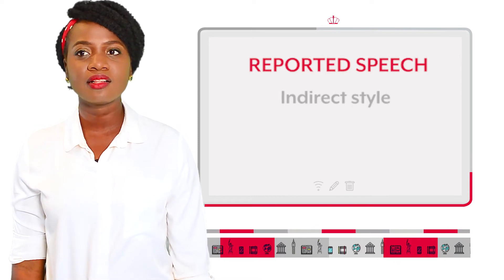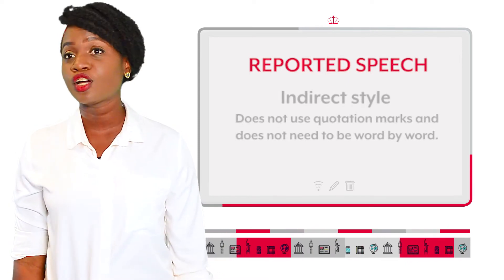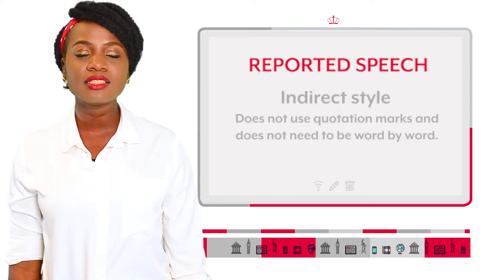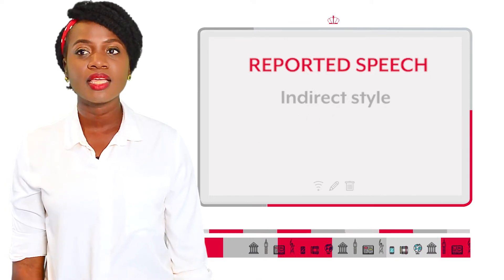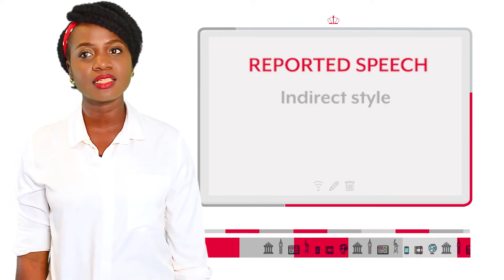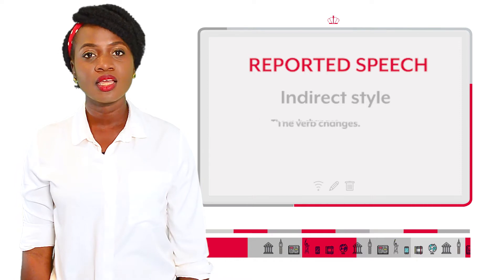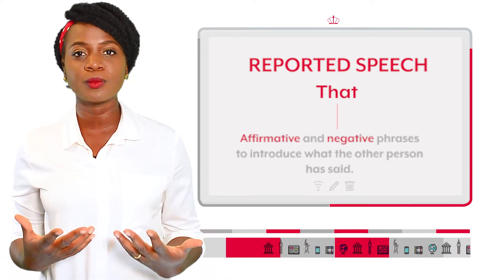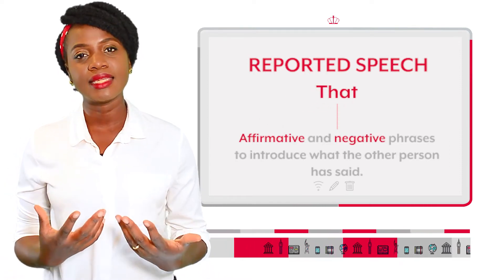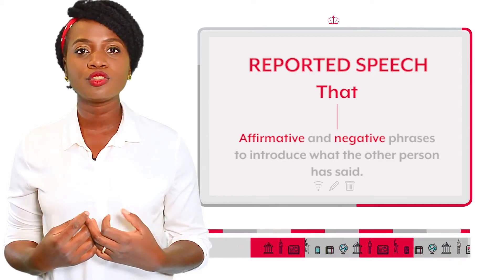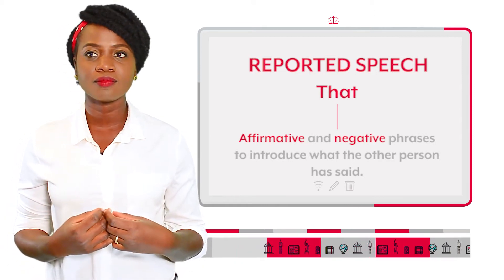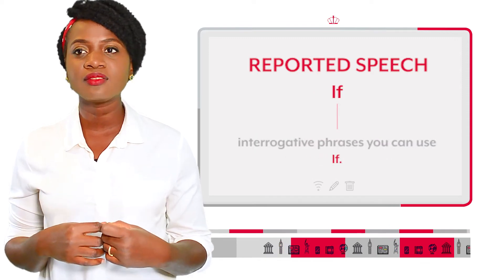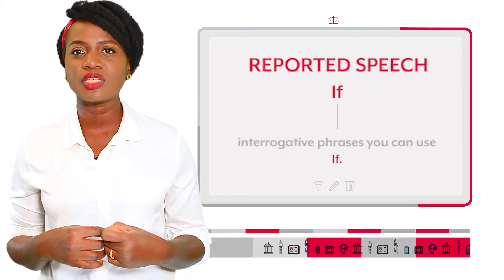Indirect style, unlike direct style, does not use quotation marks and does not need to be word by word. In general, when the indirect style is used, the verb changes. Sometimes 'that' is used in affirmative and negative phrases to introduce what the other person has said. On the other hand, in interrogative phrases, you can use 'if'.